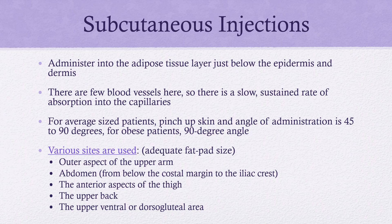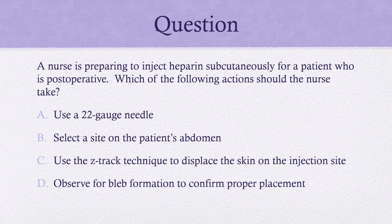If you have 1.5 mL to give subcutaneously, you may need to separate it into two injections. Practice question: a nurse is preparing to inject heparin subcutaneously for a post-op patient — which action should the nurse take? A 22-gauge needle is too large for subcutaneous; Z-track technique is for IM injections; observing for a bleb is intradermal. The correct answer is to select a site on the patient's abdomen — that fatty tissue is what you're trying to reach.